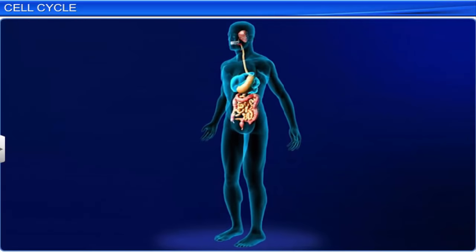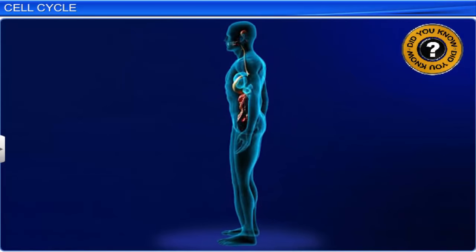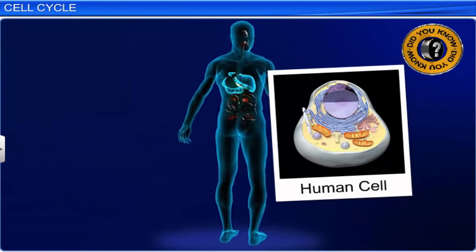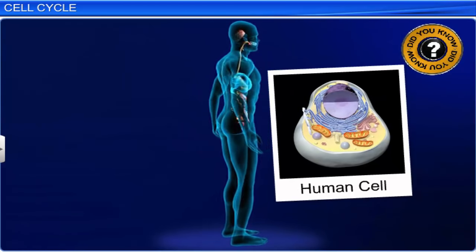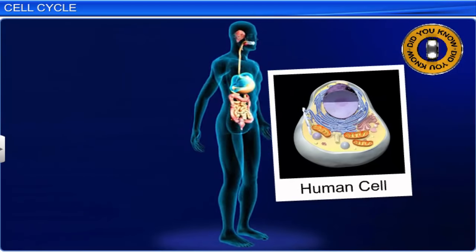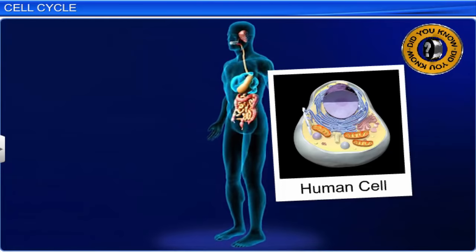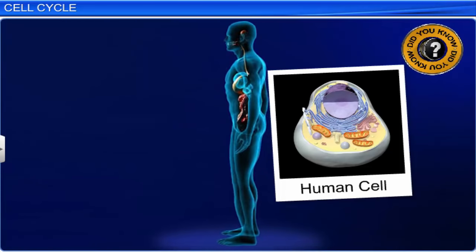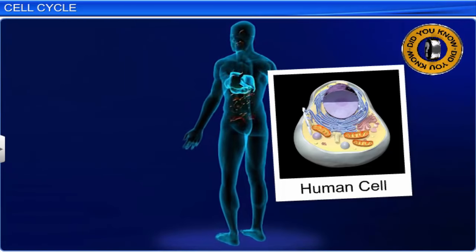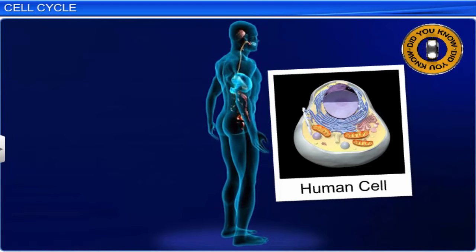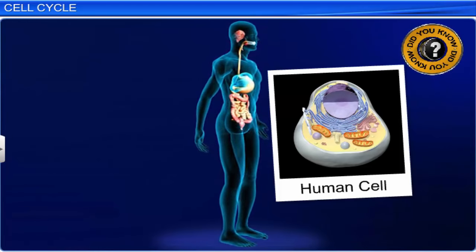Did you know that in the 24-hour average cell cycle of a human cell, proper cell division lasts for only about an hour, while more than 95% of the cell cycle duration is the interphase?